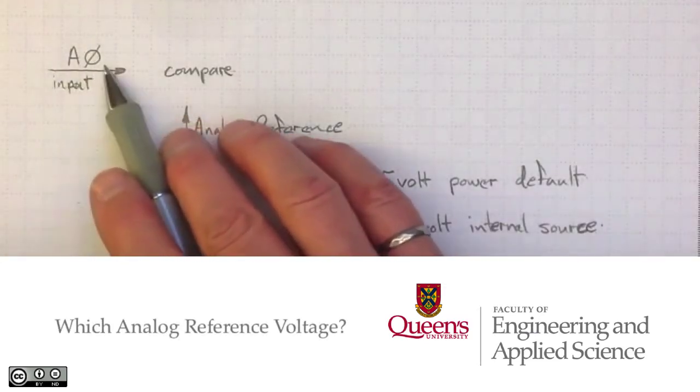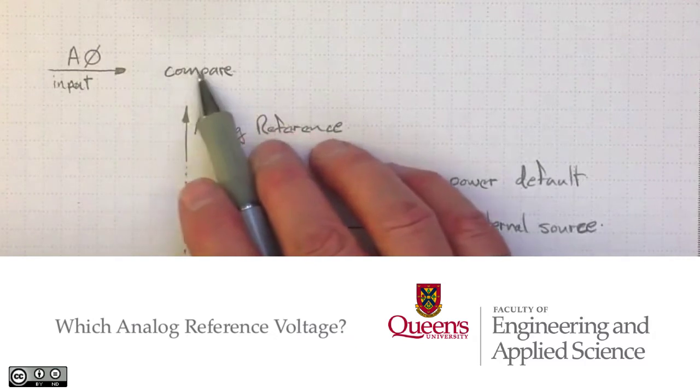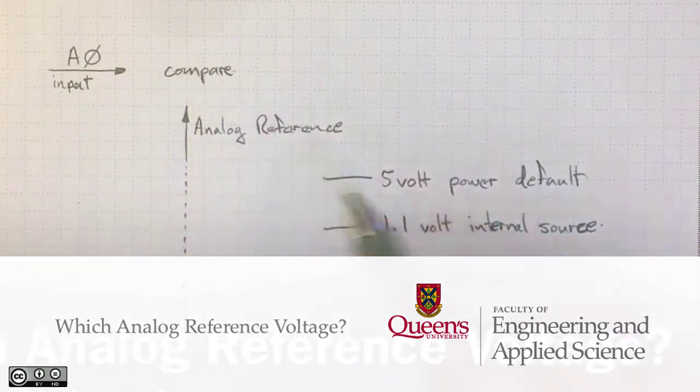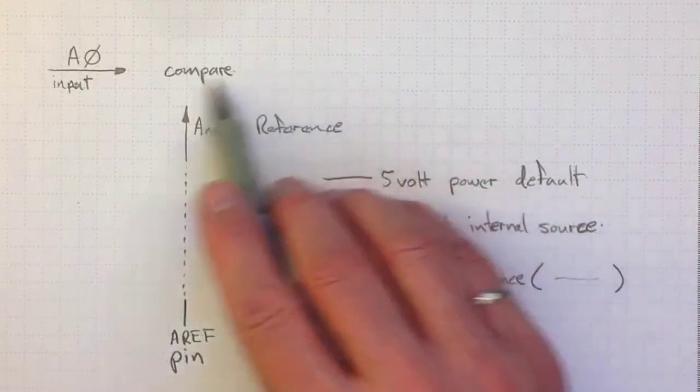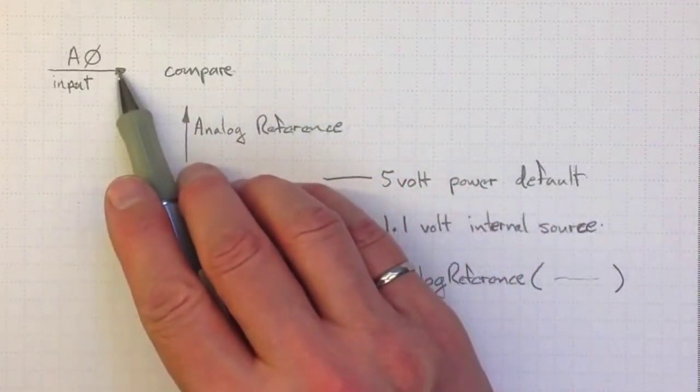When the Arduino has an analog input, it compares that analog input to some analog reference voltage to determine what the digital version of that analog input ought to be.